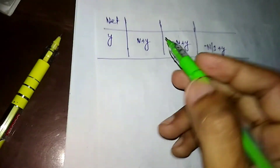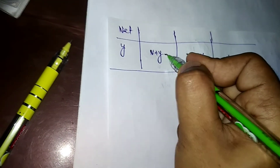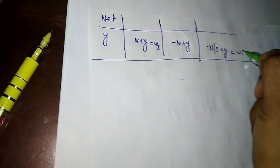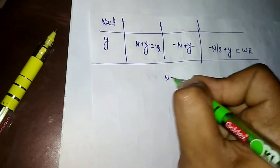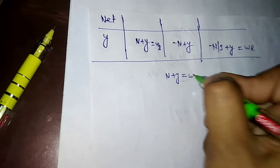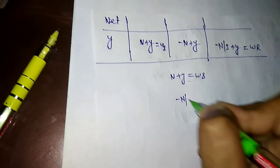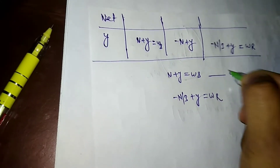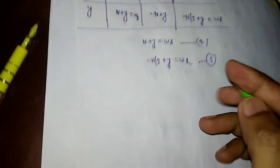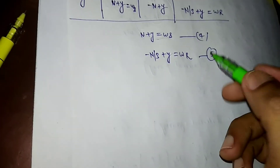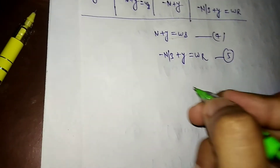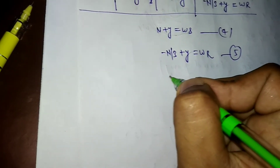From the question, the speed of the sun gear is omega_S, so N + y = omega_S (equation 4). The speed of the ring gear is omega_R, so -N/3 + y = omega_R (equation 5). We solve equations 4 and 5 to find y, the angular speed of the arm.